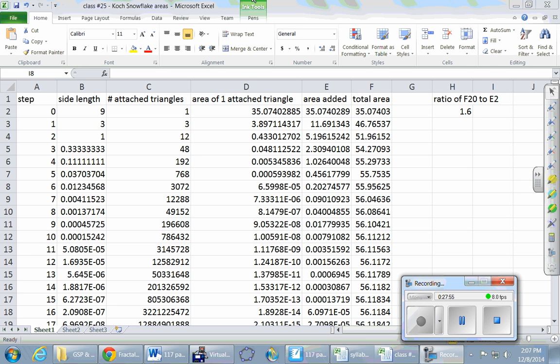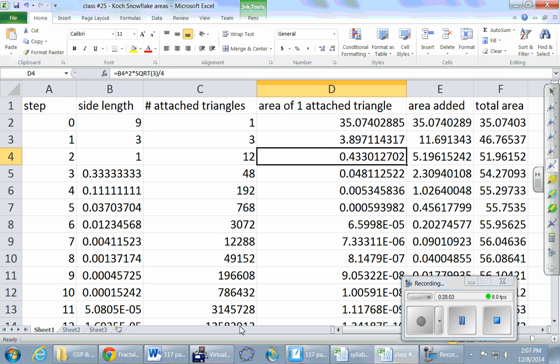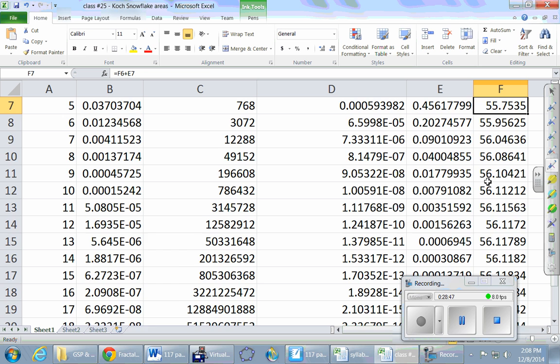I have projected an Excel file. Here's our Excel file. This is exactly what you guys are filling in, just programmed in with all the formulas. We started with a 35.1, then a 46.8, 51.9 or 52, then 54.3, 55.3, 55.7. Are the numbers getting bigger or smaller? Bigger. But at a smaller and smaller rate. The gains every time are less than the gains the previous time.